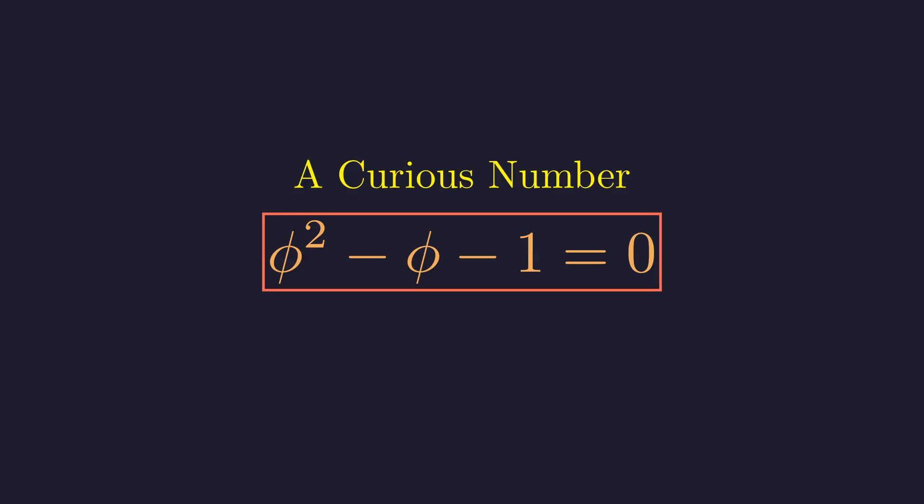For centuries, mathematicians have been fascinated by a particular number born from a very simple equation. The positive solution to this quadratic is known as the golden ratio, or phi. Notice how similar this equation is to the one we just solved for y. Compare the coefficients. 1, negative 1, negative 1. Our y equation had coefficients 1, 1, negative 1. They're closely related.